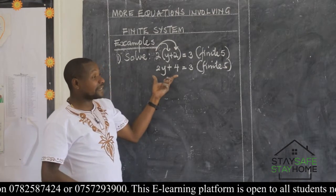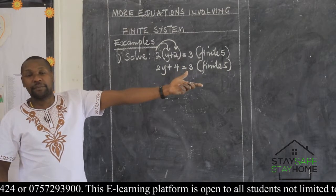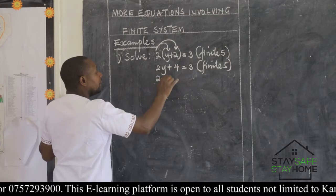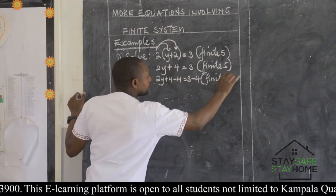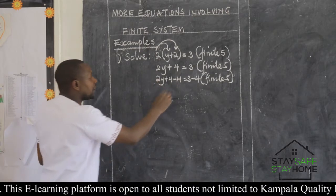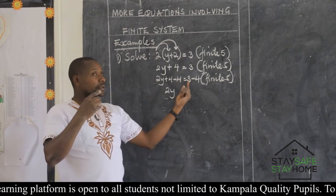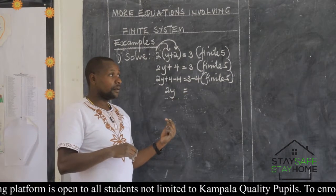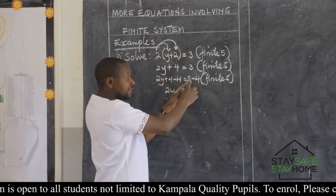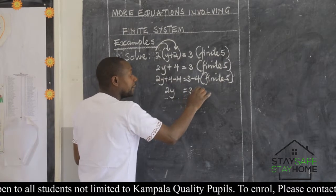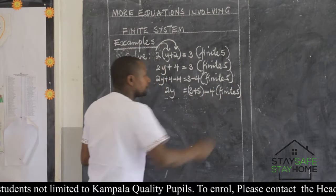I want you to relate this equation on the second step to the previous equations we had. Here we can move, just following the idea from the previous lesson. So we shall say 2y plus 4, we eliminate minus 4, is equal to 3 minus 4, but this is finite 5. When the first figure is less than the next, we shall not have a negative as we had it in P5 under integers. Instead, we have to enlarge this 3 by bringing the finite, whereby we shall have 3 plus 5.